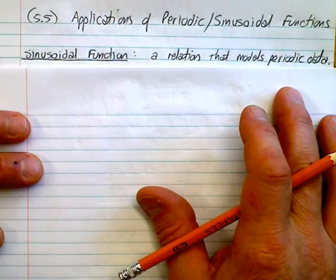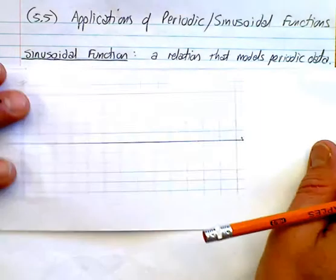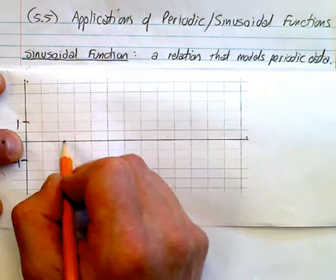That's basically a relation that models periodic data. Now what we're looking at with periodic data is sine and cosine functions. So hopefully you remember that we are breaking things down into four pieces.